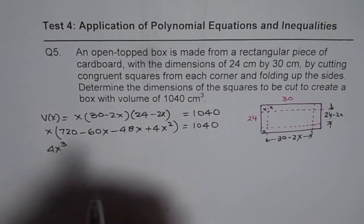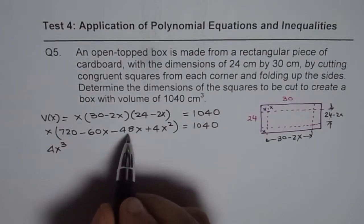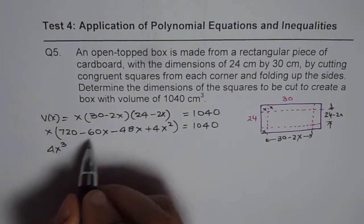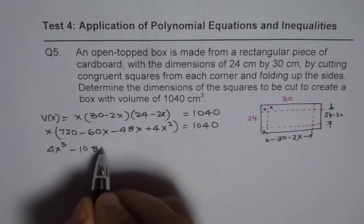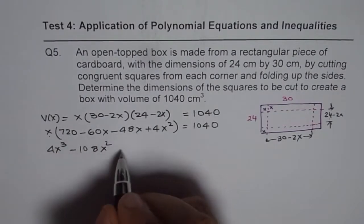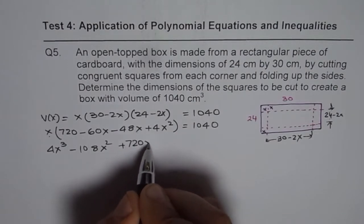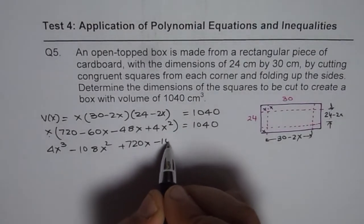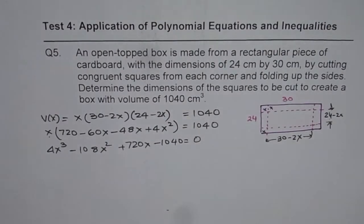Combine these two terms. We get 8 with negative sign, 8 and 6 plus 4 is 10, 108. x times x is x square. And then we have plus 720x. And let us bring 1040 to the left side. So, we will come with a negative sign equals to 0.